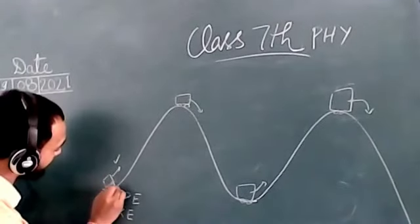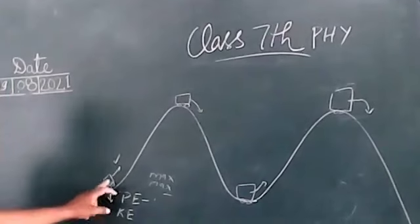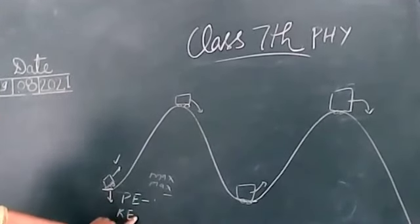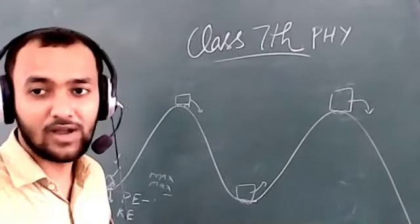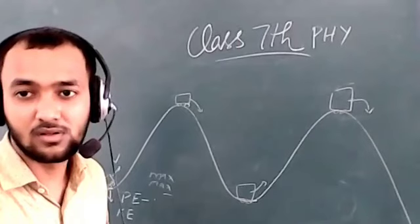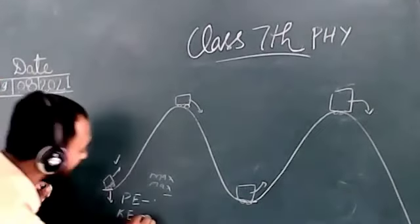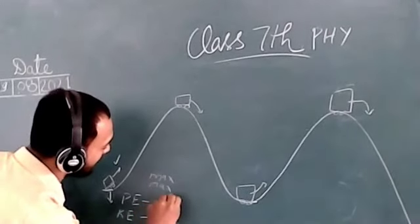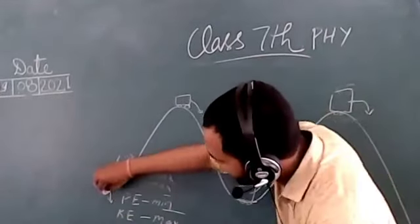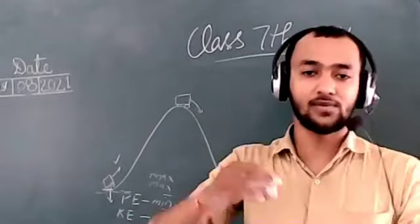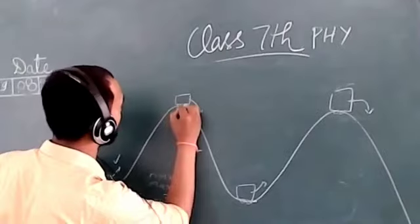At the lowest point, kinetic energy is maximum and potential energy is minimum — it will be zero because the car is at ground level, so height h = 0. When the car starts moving and reaches the highest point, it stops for a moment.